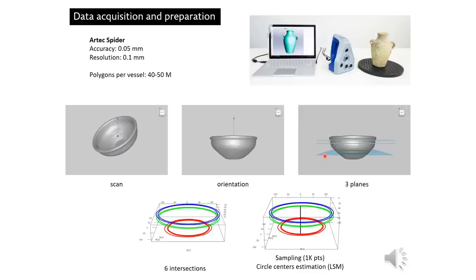Each plane cut the outer and inner surfaces of the bowl, creating six intersections per vessel. In order to standardize the number of points, each intersection was sampled by 1000 equally spaced points. Finally, the centers of circles corresponding to the rotational axis were calculated based on the least squares method.